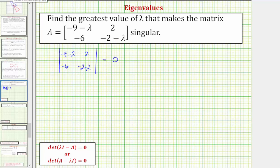And now the value of the two by two determinant is equal to this product minus this product. So we'll have the quantity negative nine minus lambda times the quantity negative two minus lambda minus two times negative six, and this must equal zero.